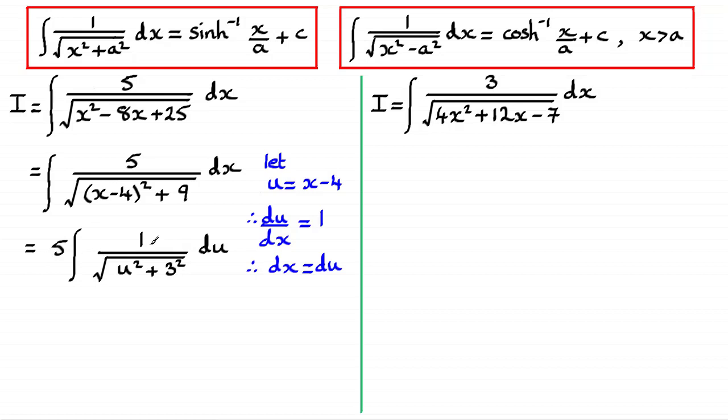So hopefully you can see now that what I've got here is essentially this particular type of integral. And we can see that the answer is the inverse sinh of x over a. So applied to this one, the answer here is going to be 5 times the inverse sinh of u over 3, and then I've got that constant of integration.